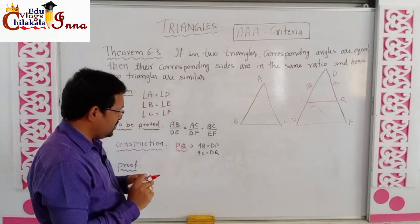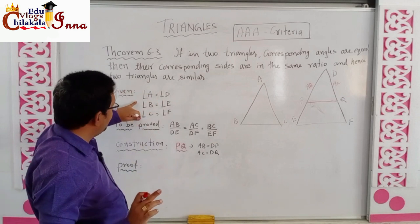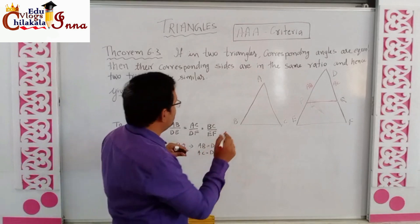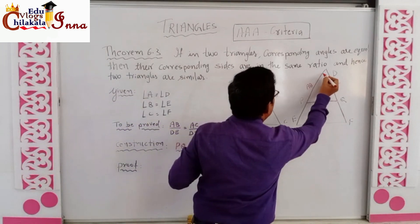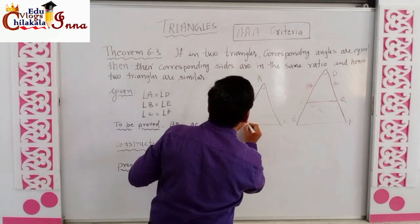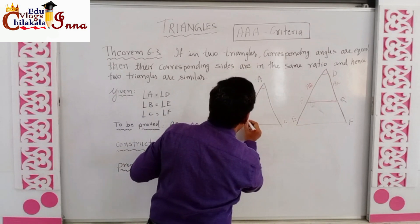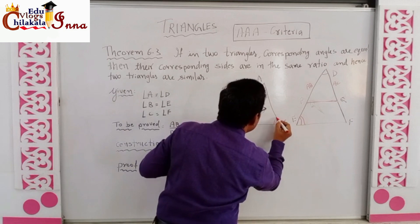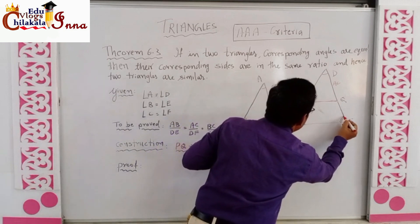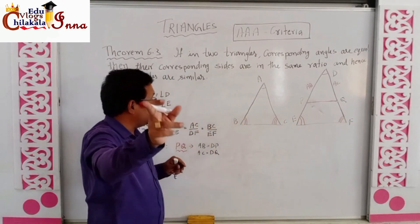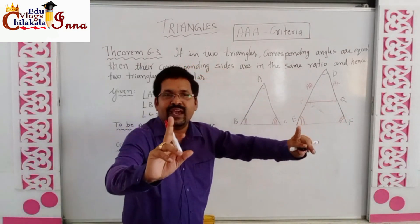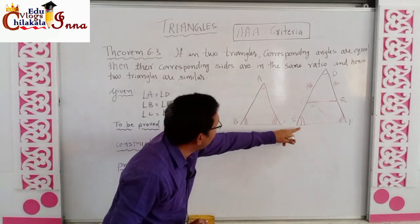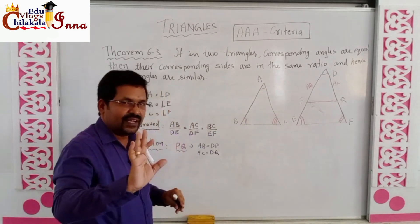After doing the construction, let me mark the given again: angle A equals angle D, angle B equals angle E, and angle C equals angle F. That is given in the statement — in two triangles the corresponding angles are equal — which is why A equals D, B equals E, and C equals F.